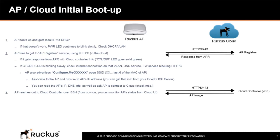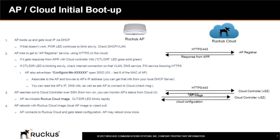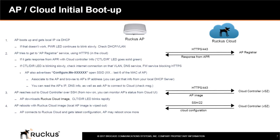Next, the AP reaches out to the cloud controller over SSH. From this point, you can monitor the AP's status from the cloud UI. The AP then downloads the Ruckus cloud image — while this is happening, the Control or DIR LED blinks rapidly. Next, the AP reboots with the Ruckus cloud image and the local AP image is wiped out. The AP then connects to the Ruckus cloud using SSH port 22 and gets the latest configuration. After this, the AP may reboot one more time.